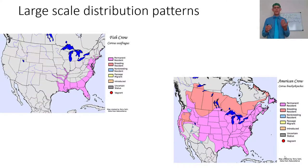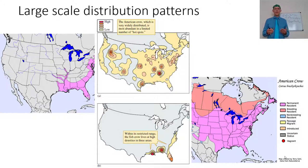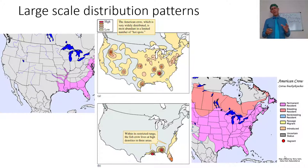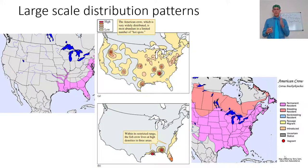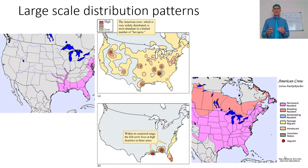These crows aren't evenly distributed. The American crow is more dense in some areas — notice all of those crows in Idaho, in Tennessee, in Houston, in Kansas City. They sometimes flock together in large murders. But that would be a dispersion question, not a distribution question. The fish crow is located anywhere along its range, but within the range it has a very high density in three areas. Organisms can be more or less common throughout their distribution.